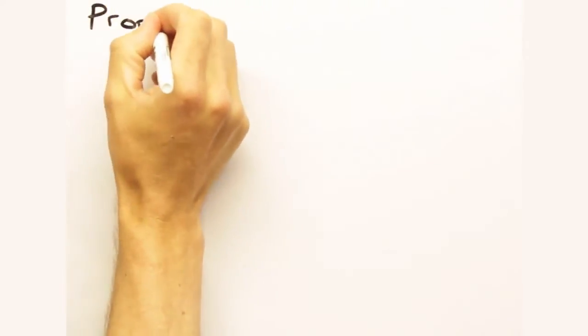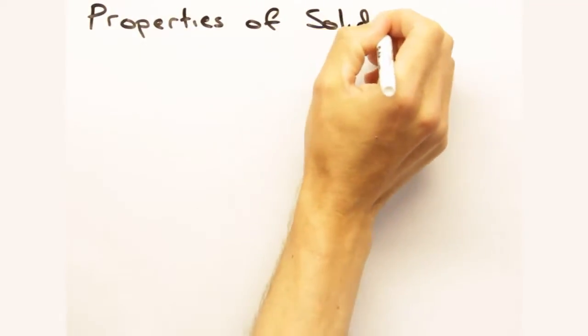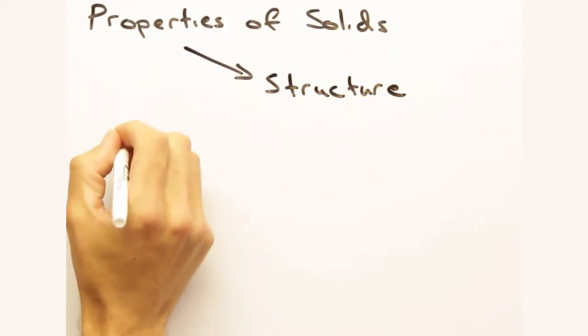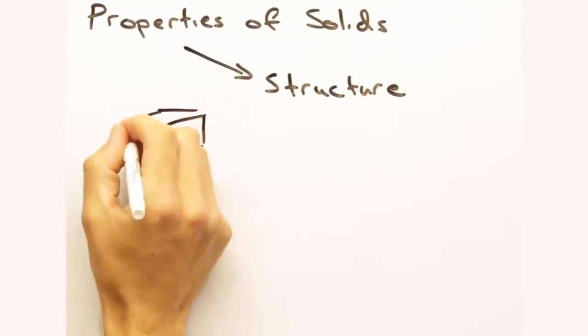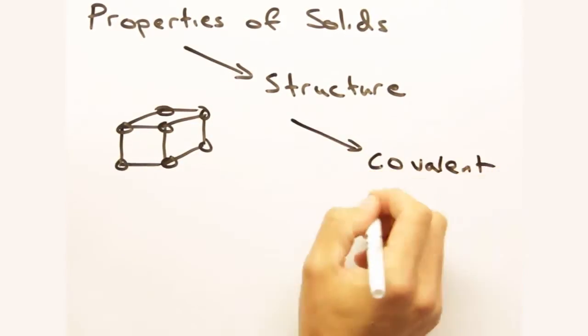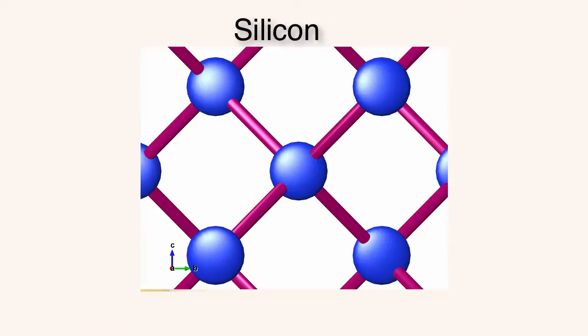Often in solid state, we care about properties, stuff like magnetism and superconductivity. But to get to these properties, we need to understand the underlying structure of solids. Today we're going to start with covalent bonding in solids, as this is the basis of so many important materials.